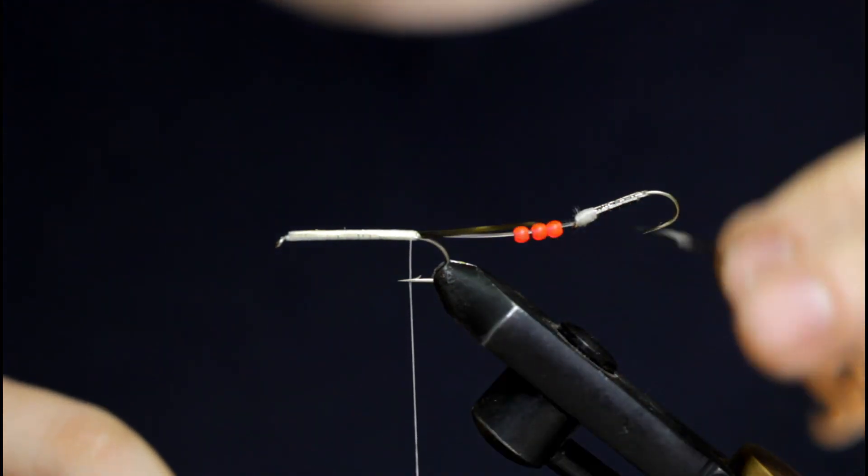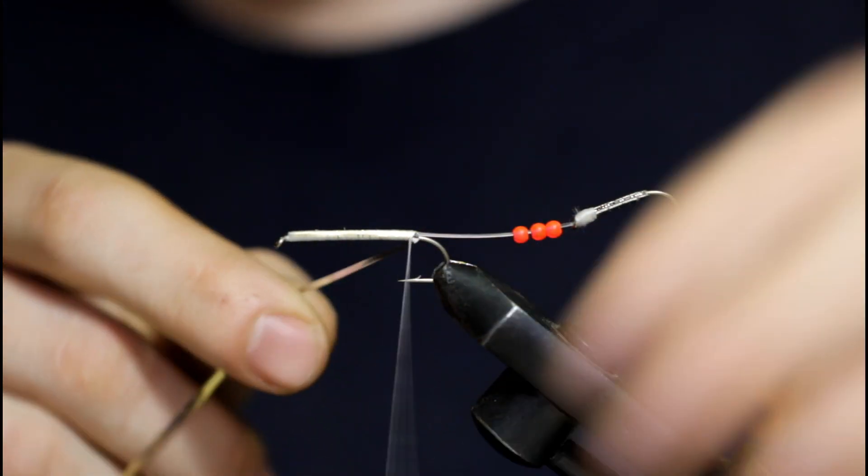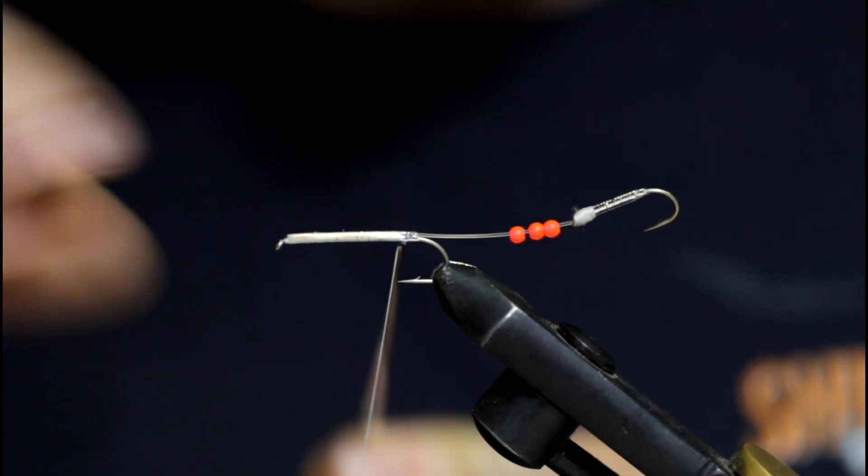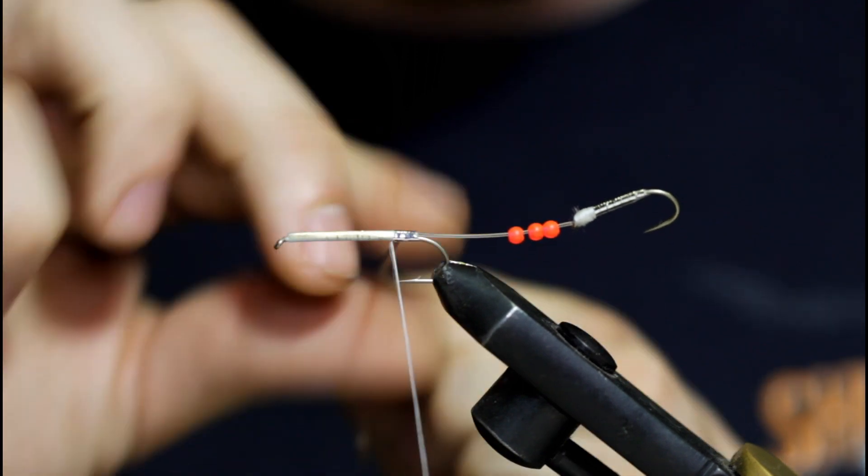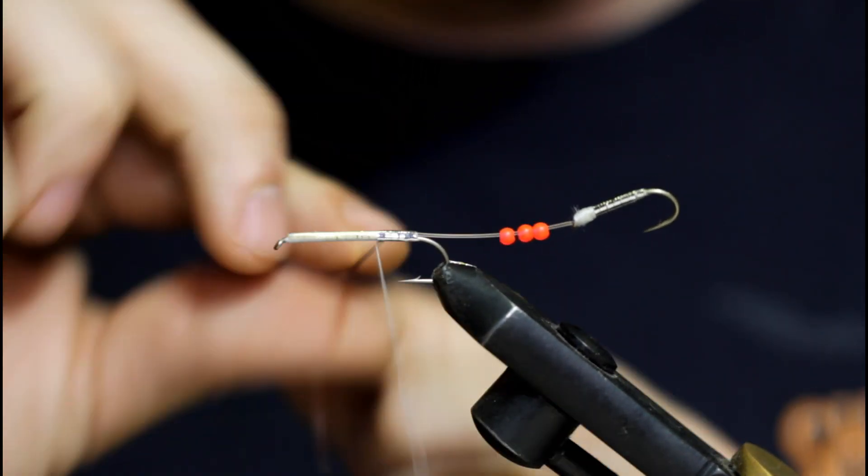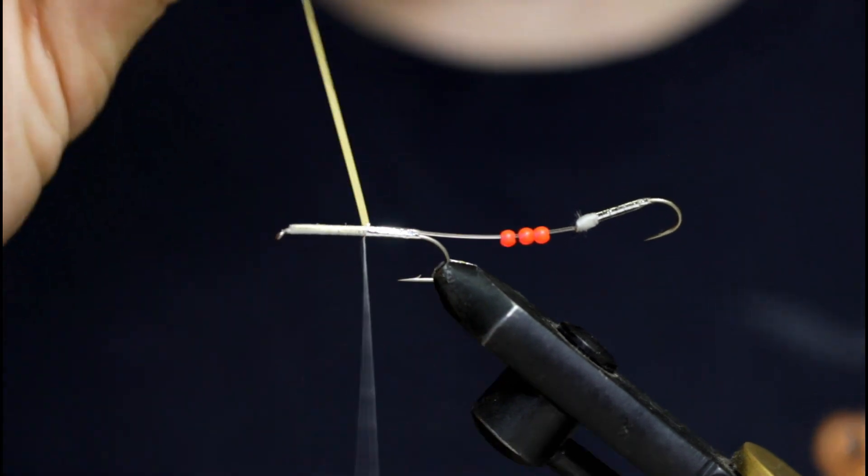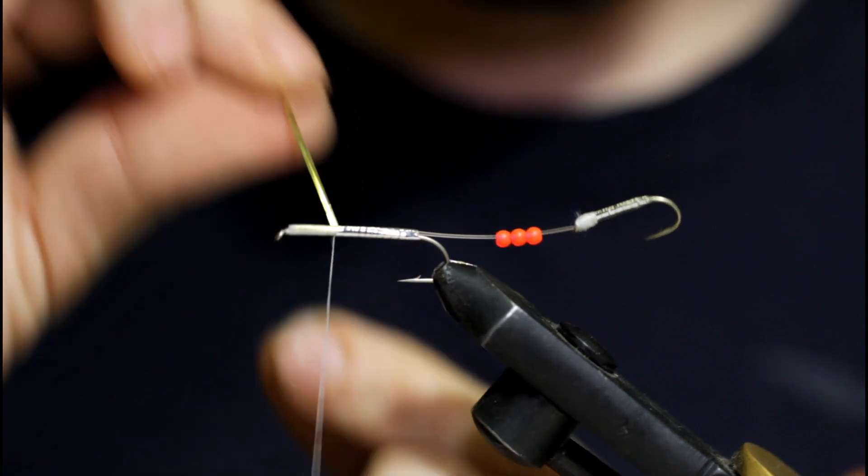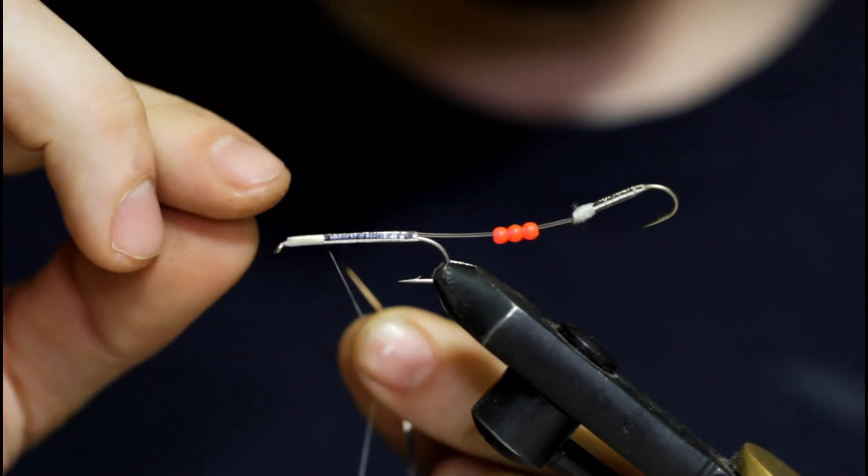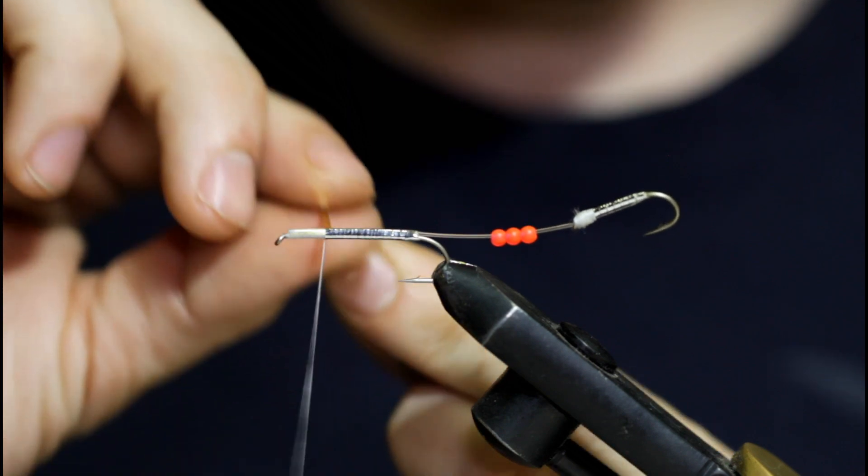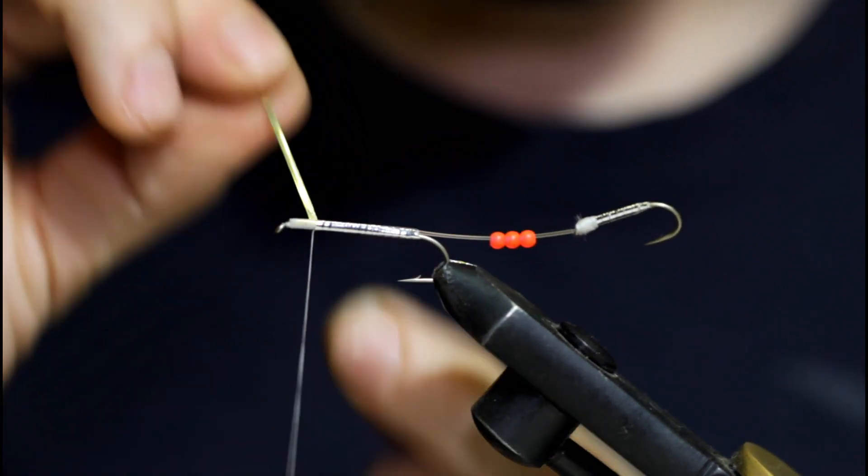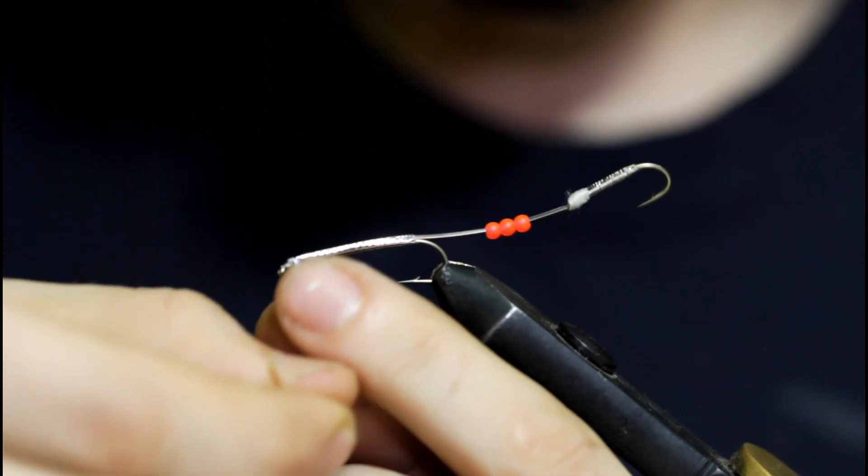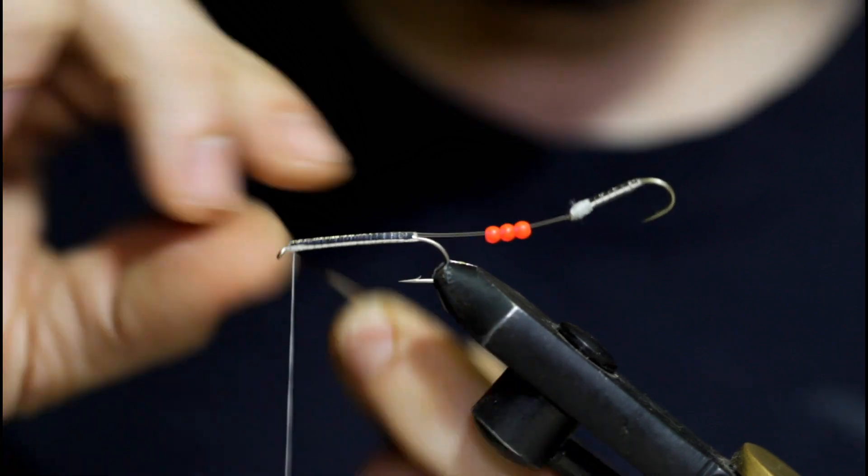Now I'm going to leave my thread here just to show you guys an alternative way of wrapping. Just leave the thread as a guide. I really do believe that this helps to make more uniform wraps. Alternatively, you guys have seen me tie the tinsel in at the hook eye, wrap down, and then wrap back up to the hook eye to tie it off. That gives you a double layer of tinsel. That way the only thing that shows through is another layer of tinsel if you don't wrap it perfectly.